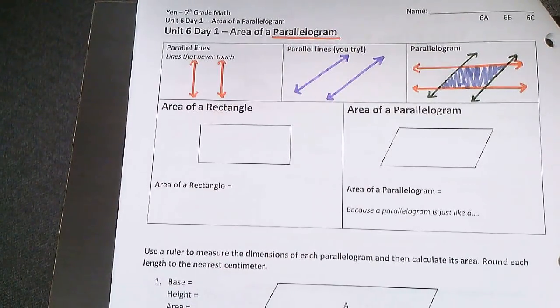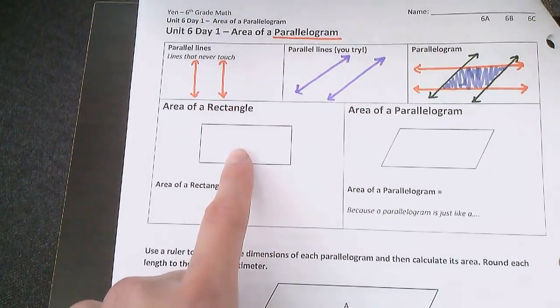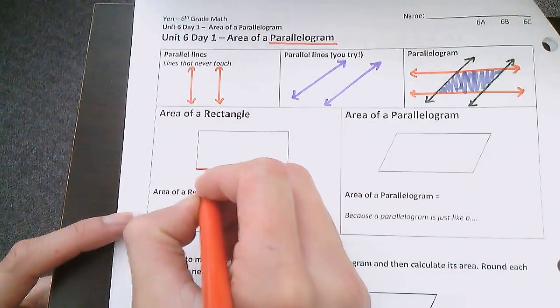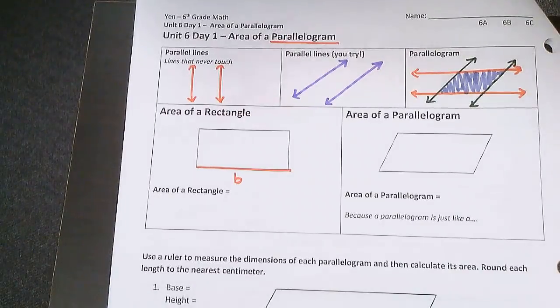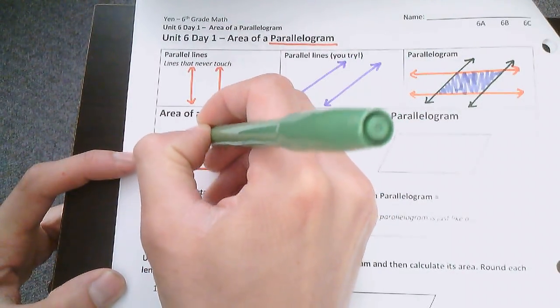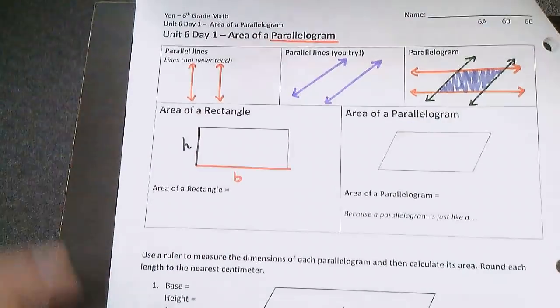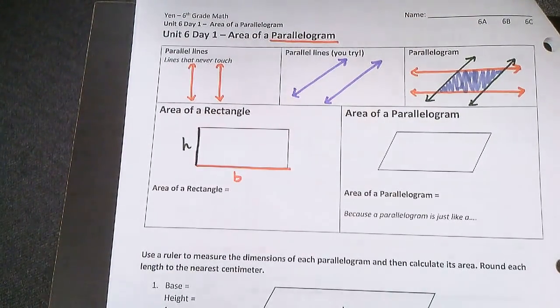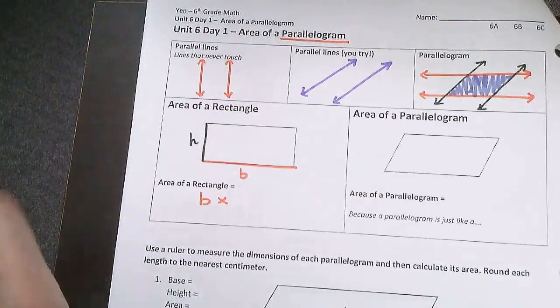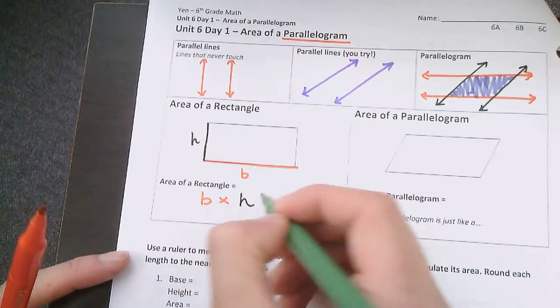Here's how you find the area. First let's talk about finding the area of a rectangle. We have our base and we have our height. And the area is just the base times the height.